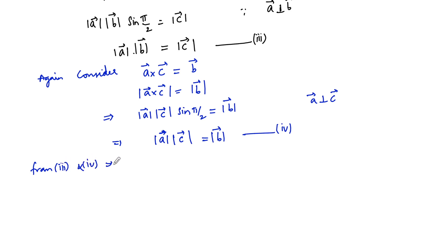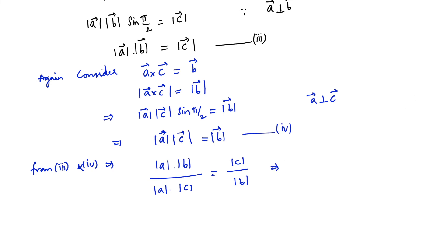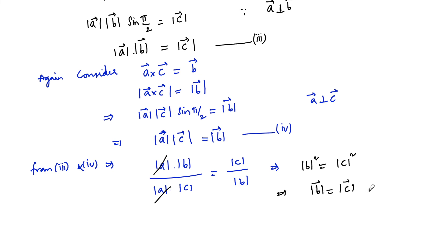From equations 3 and 4, we can write (mod a × mod b) divided by (mod a × mod c) is equal to mod c upon mod b — just by dividing equation 3 by equation 4. We can cancel mod a on both sides, giving mod b squared is equal to mod c squared, or mod b is equal to mod c. Since length is positive, we consider mod b is equal to mod c.